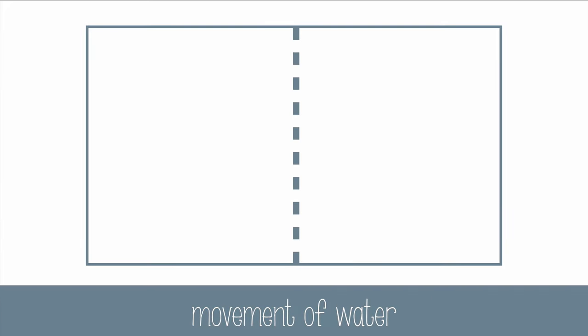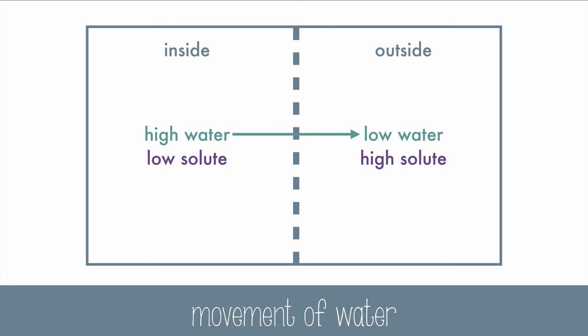Cells have water and solute inside of them, but they are mostly water. So they have a high amount of water and a low amount of solute. If I place a cell in a solution with a relatively low amount of water and a high amount of solute, the water will move from the region with a high concentration of water to a region with a low concentration of water. The solute may not be able to move,